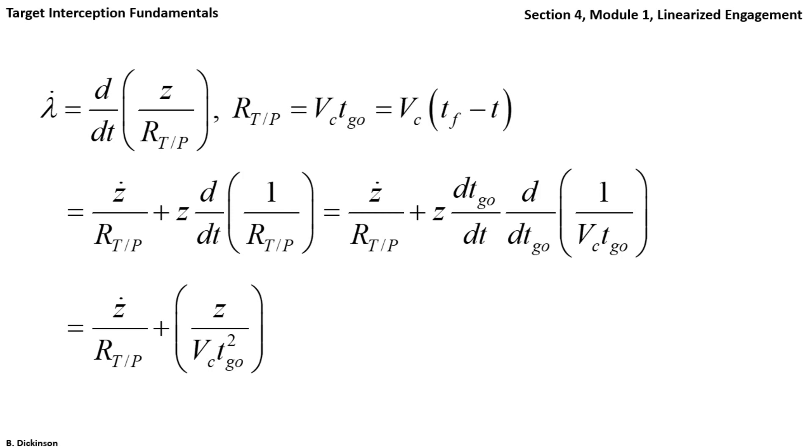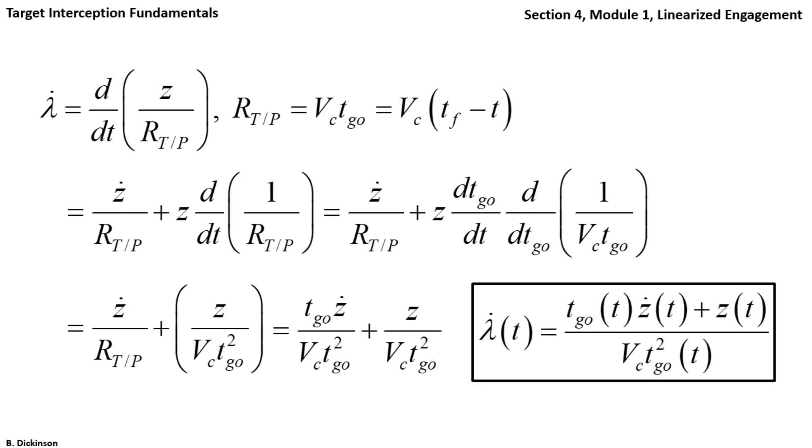And now, the first term. We can also make a substitution for the range equation. And multiplying by time to go over time to go for a common denominator, we finally get an expression for lambda dot in terms of time.